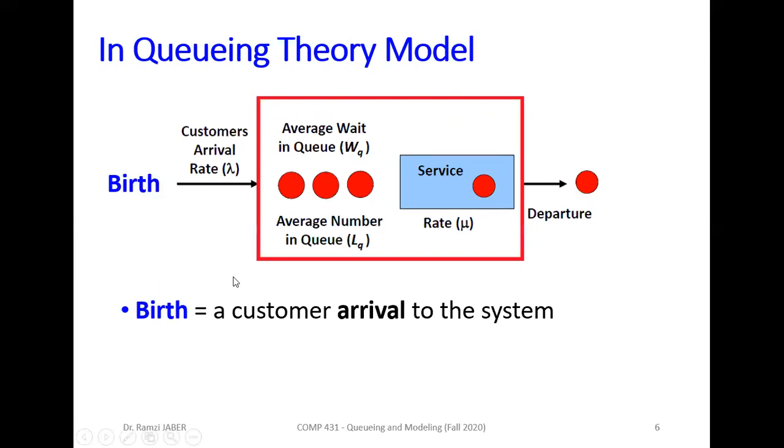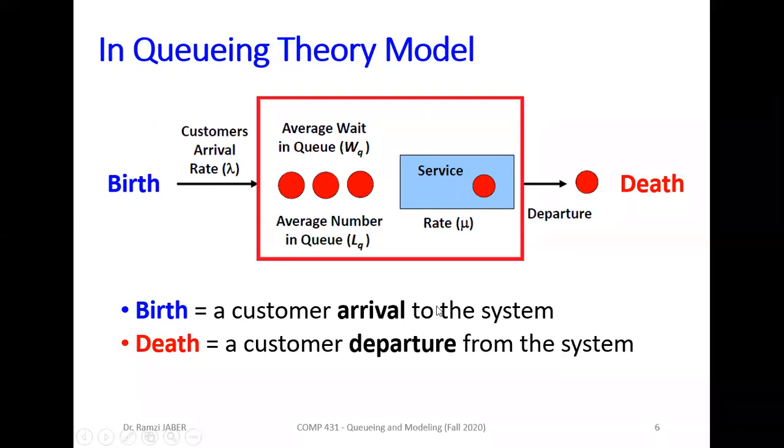In queuing theory models, a customer arrival to the system is called birth, and a customer departure from the system is called death. So in queuing theory models we'll use birth as customer arrival and death as customer departure from the system. Today this lecture will focus only on the queuing theory model.